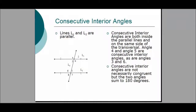Consecutive interior angles are a departure from everything we've done so far. Consecutive interior angles are not necessarily congruent, but if we have two parallel lines cut by a transversal, the two consecutive interior angles will be supplementary — that is, their angle measures will add to 180 degrees. In this drawing, Angles 4 and 5 are consecutive interior angles, and Angles 3 and 6 are another pair. Both pairs sum to 180 degrees.